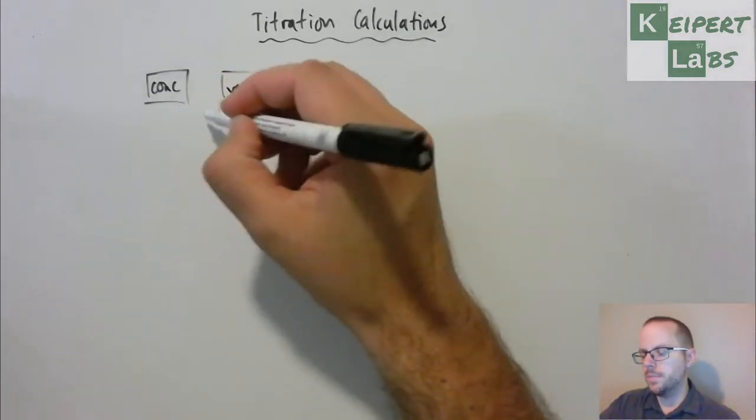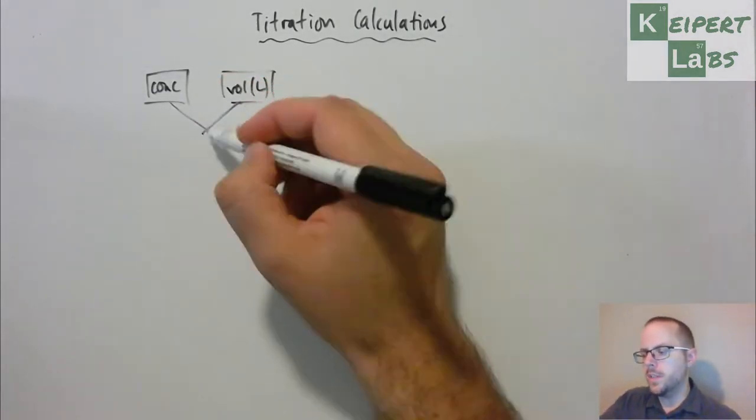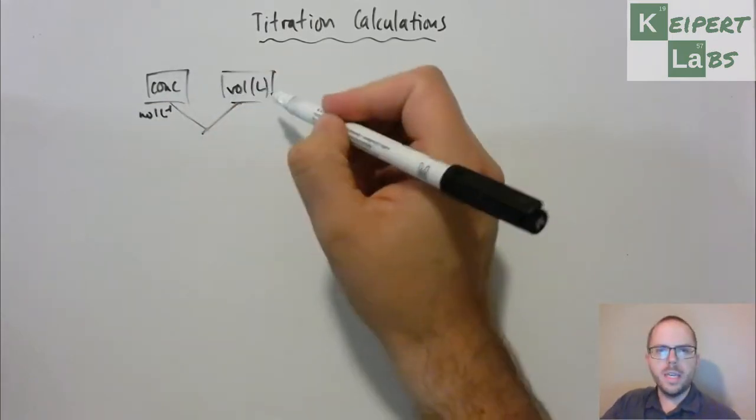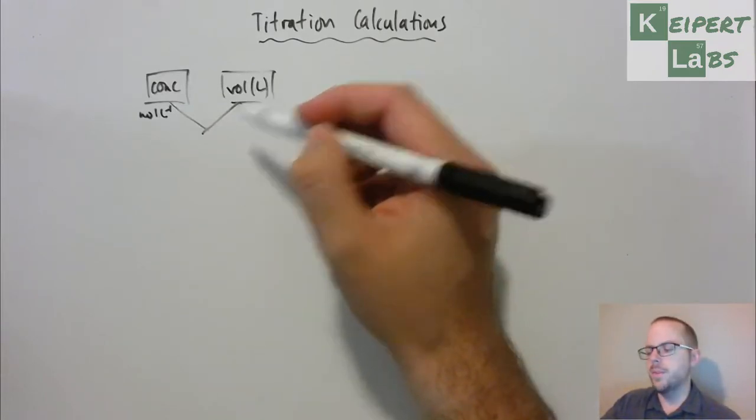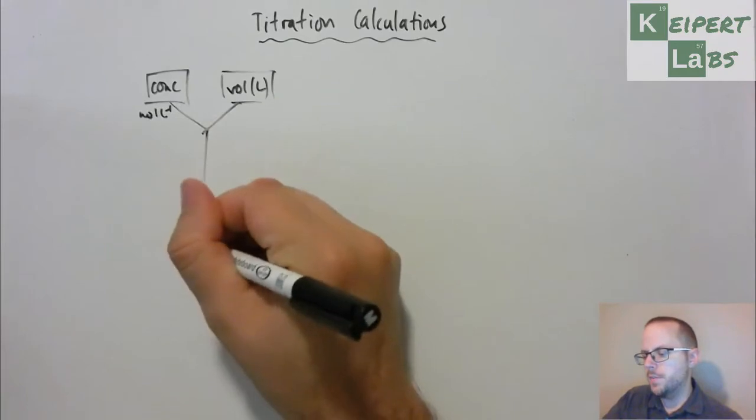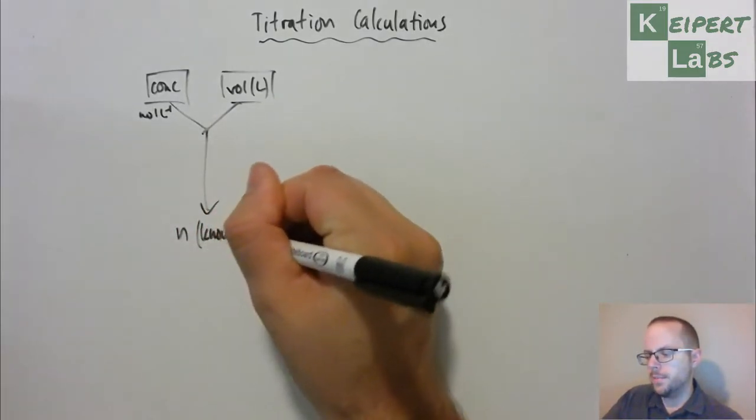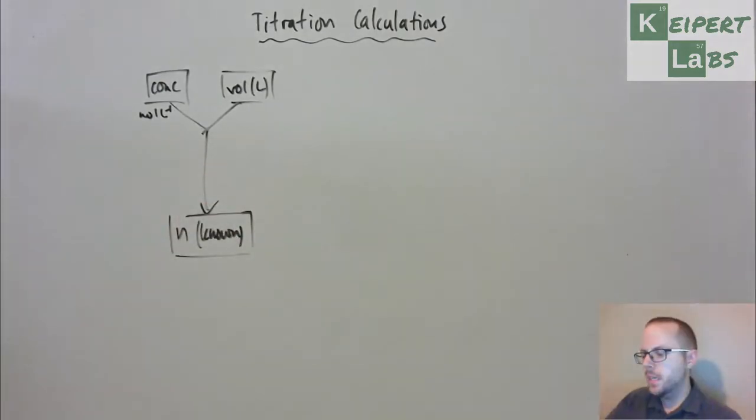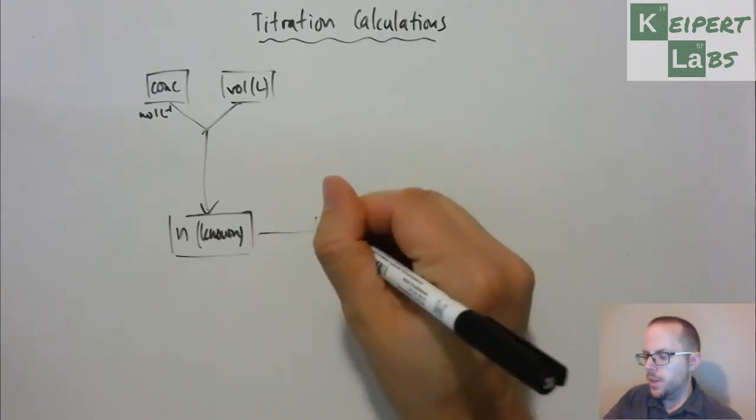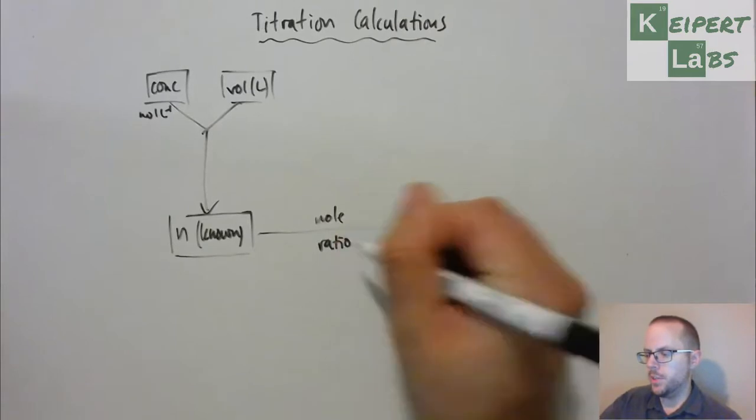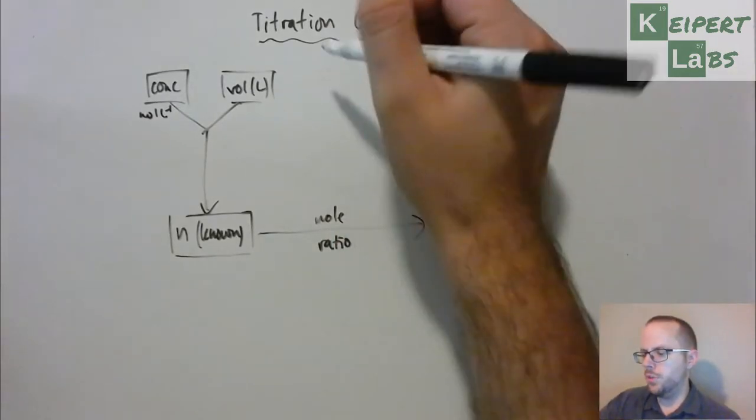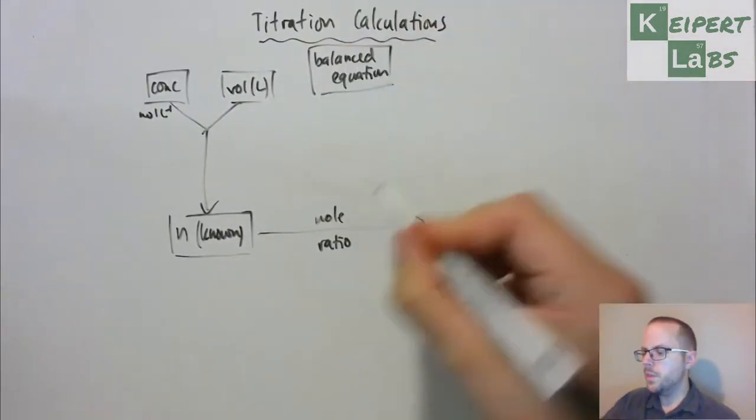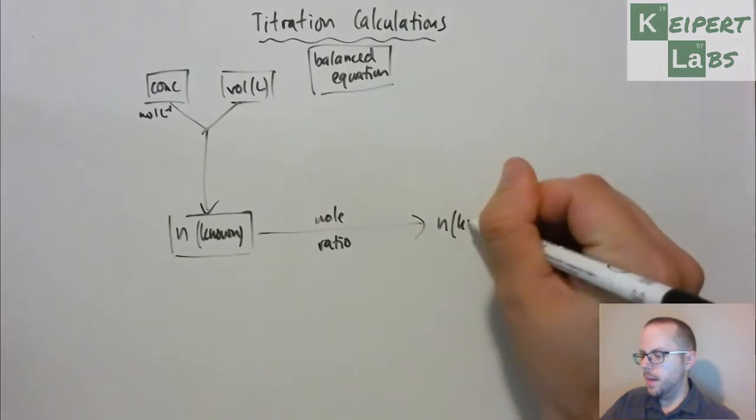What we start off with is, for our known reactant, we know its concentration in moles per litre and we know its volume in litres, or at least we know its volume and we can convert that into litres. We can use that to find out the moles of our known reactant. By using the mole ratio from the equation, the balanced equation, which we should really have started with at the outset, through the mole ratio we can convert this to the moles of our unknown.